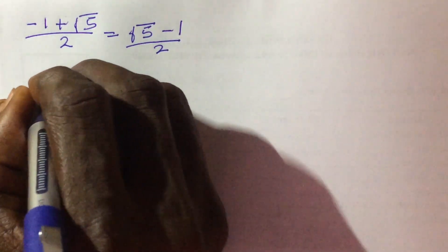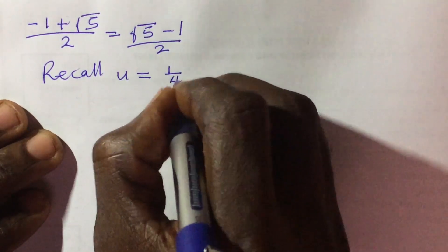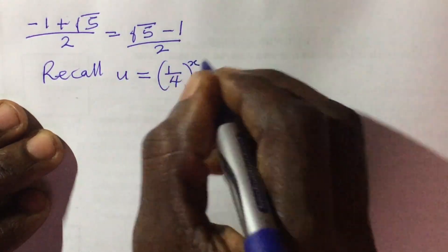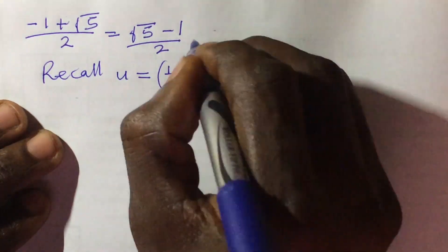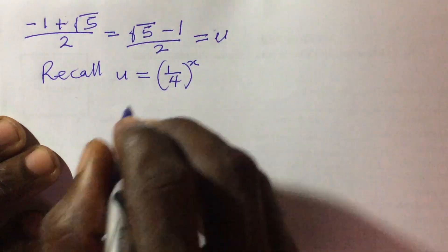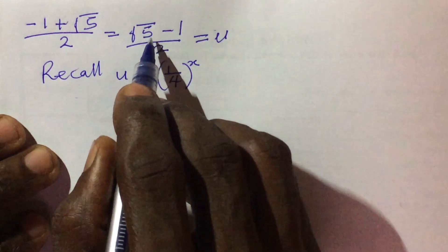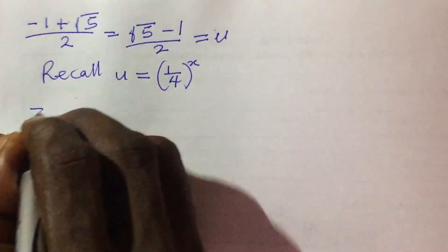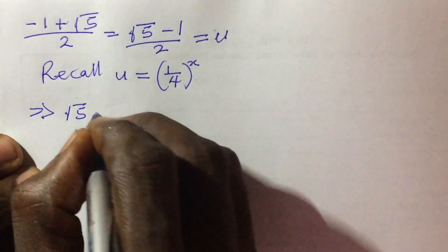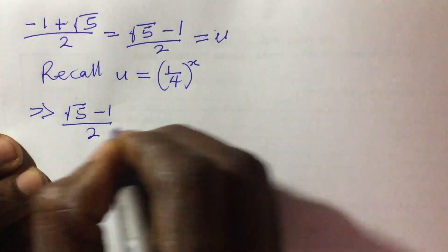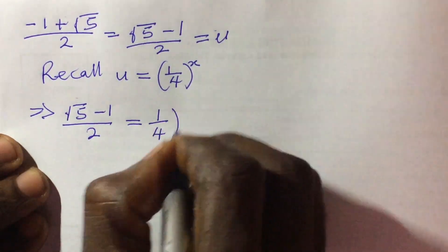Recall we said let u equal to 1 all over 4, all to the power of x. That is our u. So wherever we see u we substitute the value root 5 minus 1 all over 2. This now implies root 5 minus 1 all over 2 equals 1 all over 4, all to the power of x.